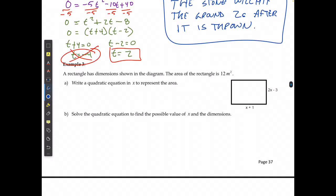For example 3, a rectangle has dimensions shown in the diagram. Here and here. The area of the rectangle is 12 meters squared. Write a quadratic equation in x to represent the area. Well, the area is equal to the length times the width. There's my length. There's my width. Which means that I know the area is 12.